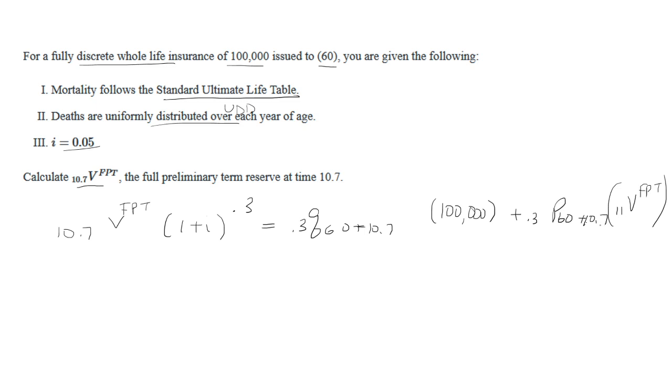Now we want to find each piece. Keep in mind we need to find the full preliminary term reserve at time 10.7, so that's going to be this guy right here. We're going to leave this as is so we need to solve for it. The interest rate is 5%, so that's going to be 1.05 to the 0.3 power.